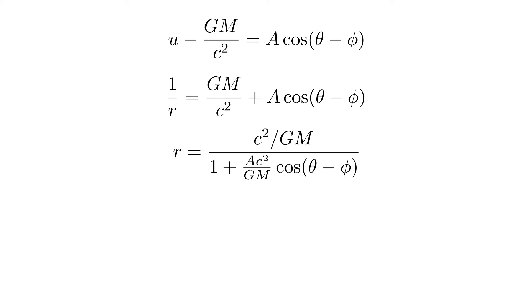There are many constants here. Let's rewrite two of them as ℓ and e. We now have a familiar form of a conic section, as mentioned in my previous video. Therefore, orbits are conic sections.